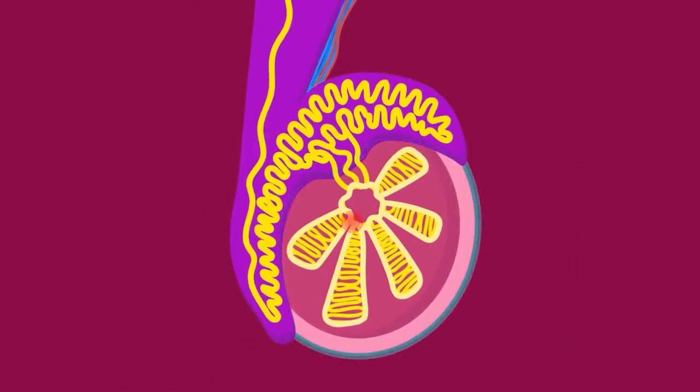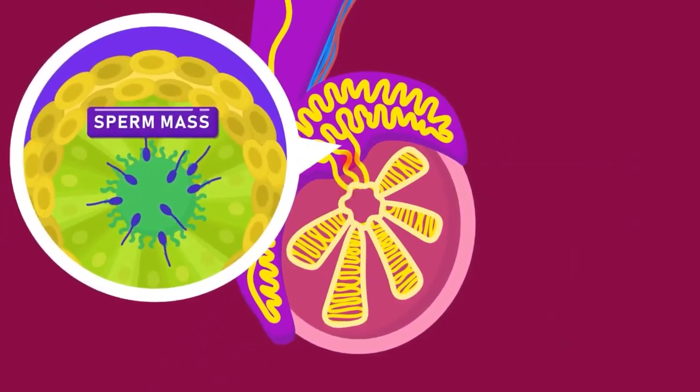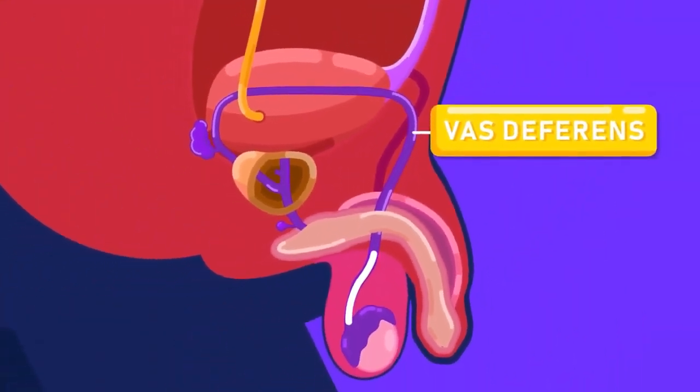The testes produce sperms. The sperms may then be stored in an inactive form in the epididymis before entering the vas deferens, or sperm duct.